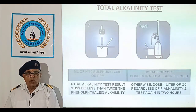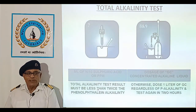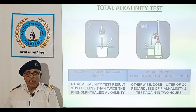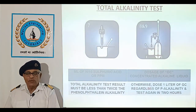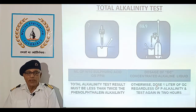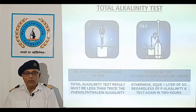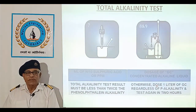Total alkalinity test result must be less than twice the phenol alkalinity. In case it goes more, dose 1 litre of GC regardless of P-alkalinity and test again in 2 hours.